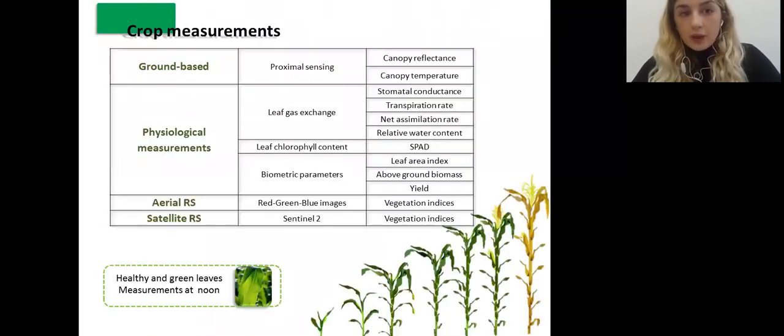When we speak about the other measurements, from the ground, we applied proximal sensing, measuring canopy reflectance and canopy temperature, physiological measurements, leaf gas exchange, leaf chlorophyll content, and biometric parameters. Aerial remote sensing was applied to take red, green, and blue images. And for satellite remote sensing, we took images taken by Sentinel-2. All measurements, they were done on healthy and green leaves. And from the ground measurements, they were done in the noon.